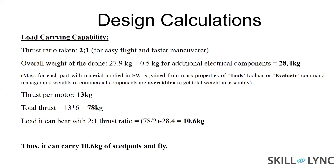The drone has a very high total weight of 27.9 kg because it is a massive drone. For the weight calculation, wherever I designed my own components like the arms, I applied material properties so I could get the exact mass from the SolidWorks Evaluate toolbar. For electronic components, I used their specific values from product descriptions and overrode the mass in SolidWorks, then calculated the total mass in the assembly environment. Each motor can generate 13 kg of thrust, so with six motors and six propellers I can get 78 kg of thrust total. Accounting for the drone's weight, it can carry an additional 10.6 kg.